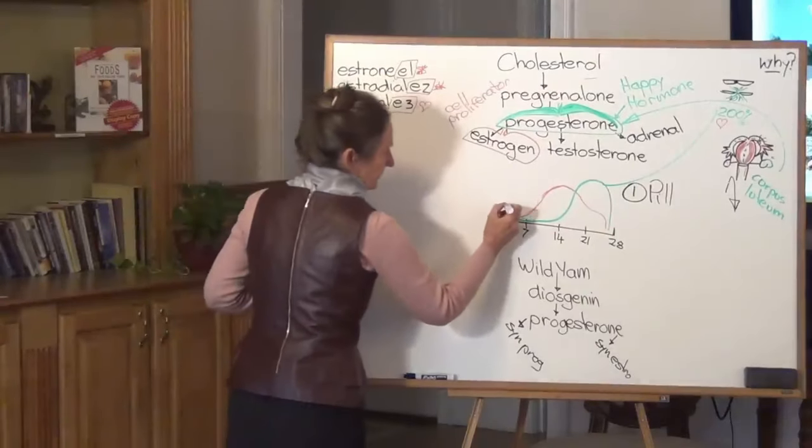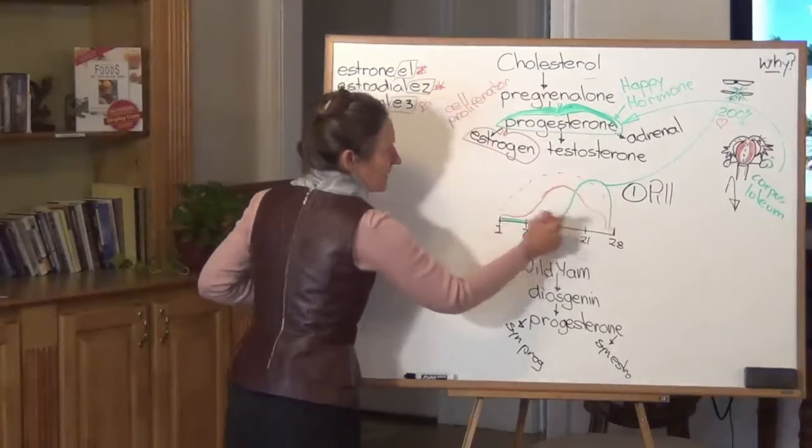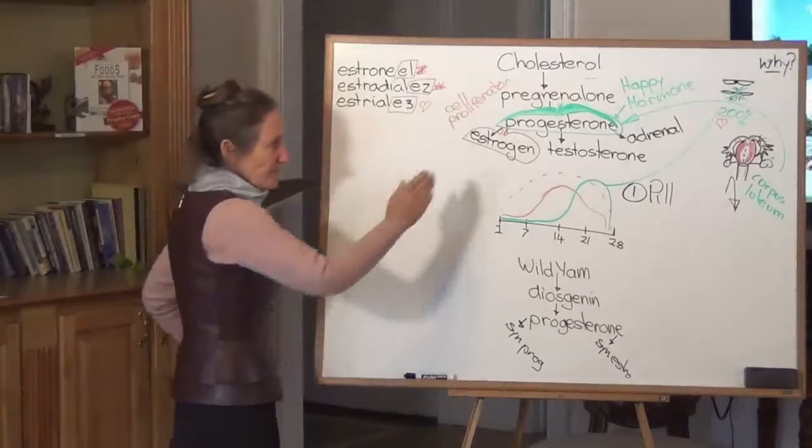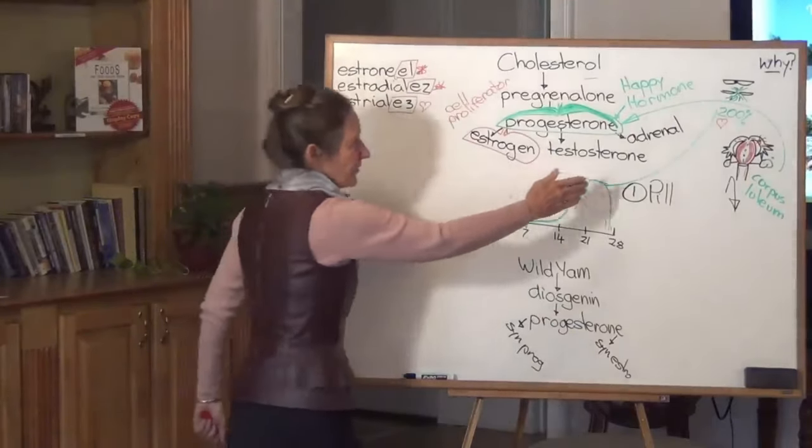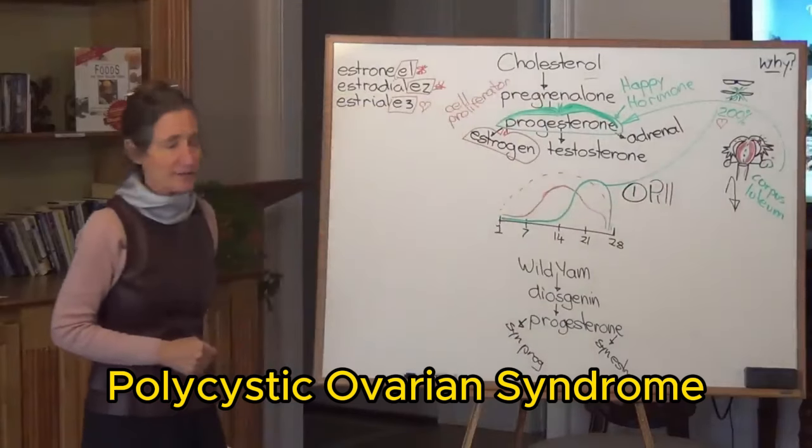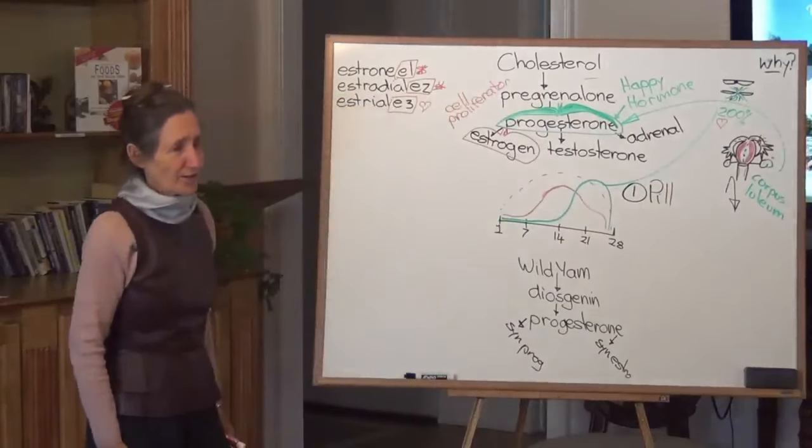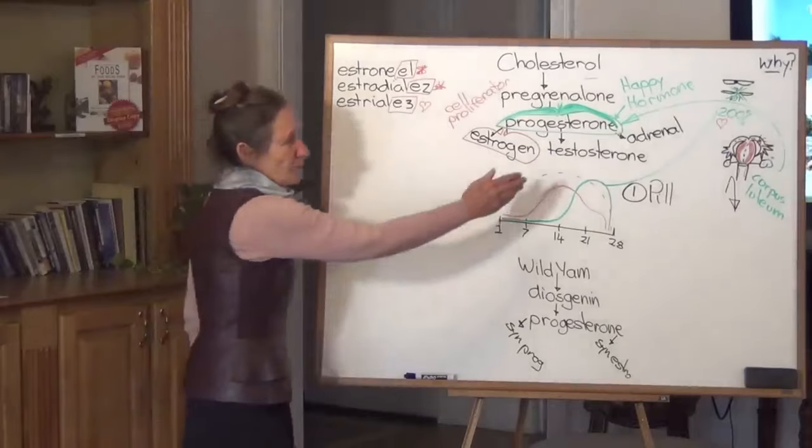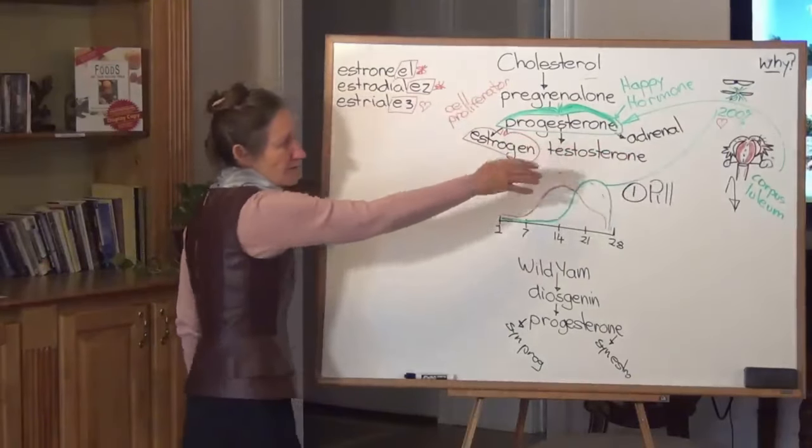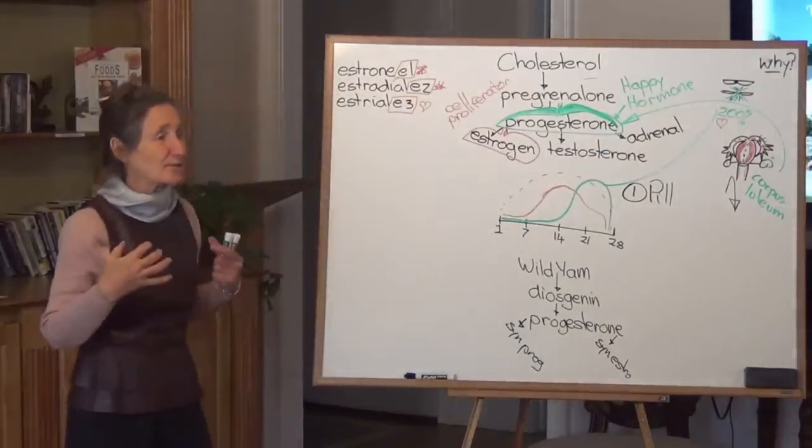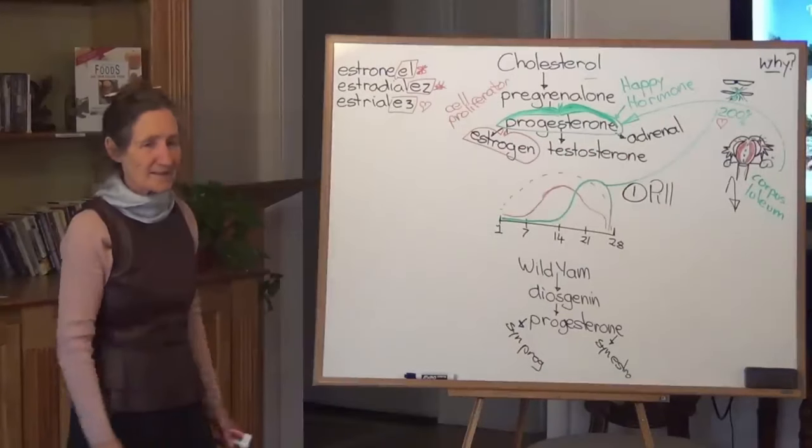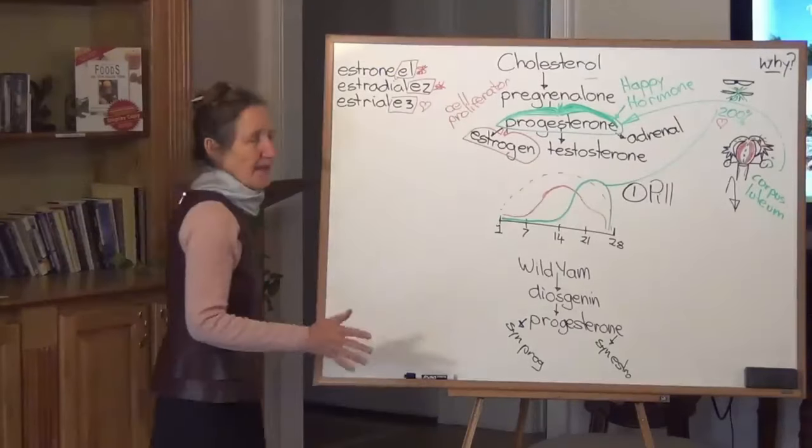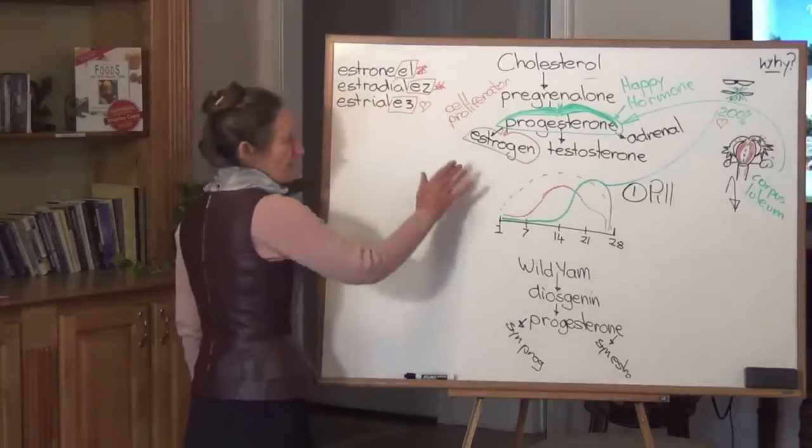And what does the cycle look like now? Estrogen's up here. Estrogen with its cell proliferator action causing massive cell growth in the uterus. There's the fibroids. Massive cell growth on the ovaries. There's your polycystic ovarian syndrome. There's your cysts on the ovaries. There's your endometriosis. This is your abnormal cells on the uterus, on the cervix. These are your cysts in the breast. This is your breast cancer. This is your uterine cancer, your ovarian cancer. And the lady cannot lose weight because of the high estrogen.